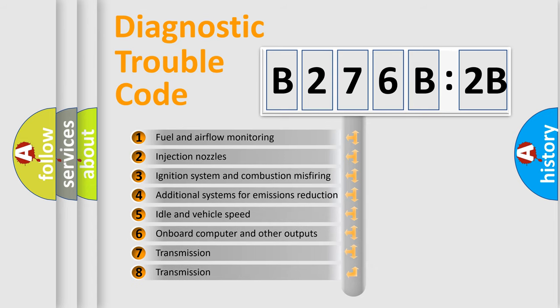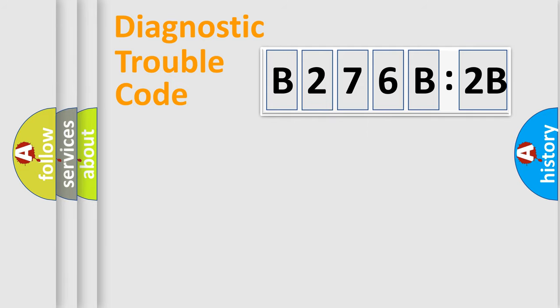The third character specifies a subset of errors. The distribution shown is valid only for the standardized DTC code. Only the last two characters define the specific fault of the group.